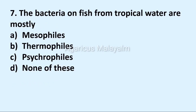Seventh question: the bacteria on fish from tropical water are mostly. Option A: mesophiles. Option B: thermophiles. Option C: psychrophiles. Option D: none of these. Correct answer: Option A, mesophiles.